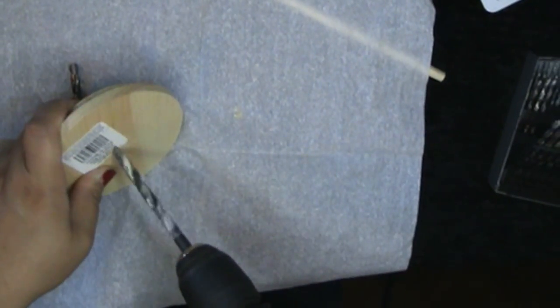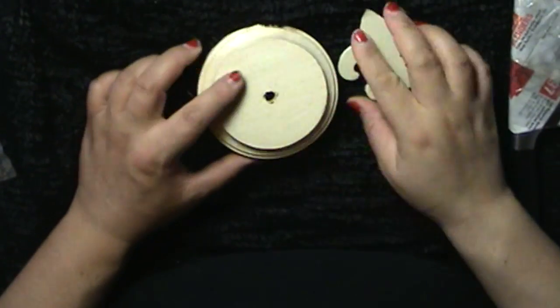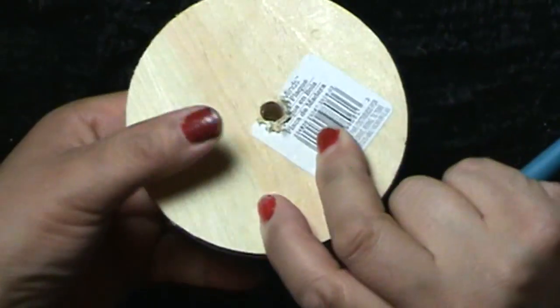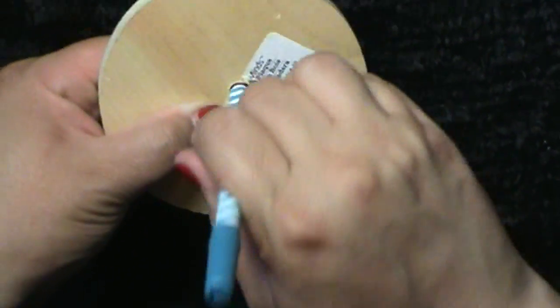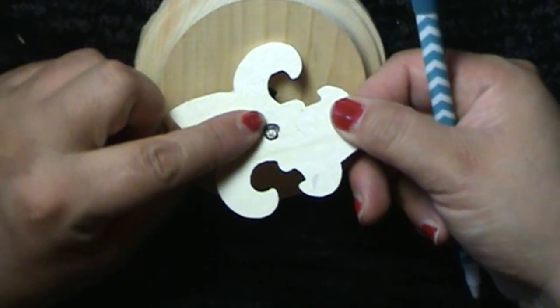Now take the decorative fleur-de-lis, or however it's pronounced, and place it on top of the wooden circular piece and mark it like such. We need to do this to find out where exactly we have to drill the hole in this little piece.